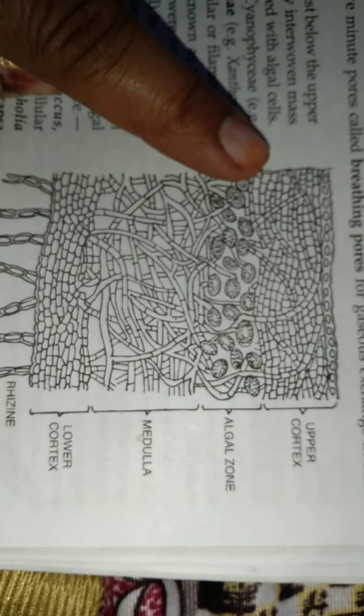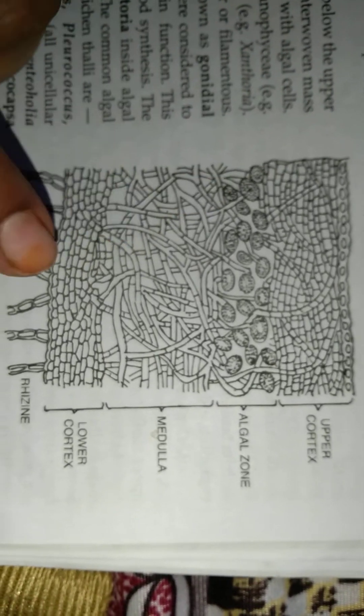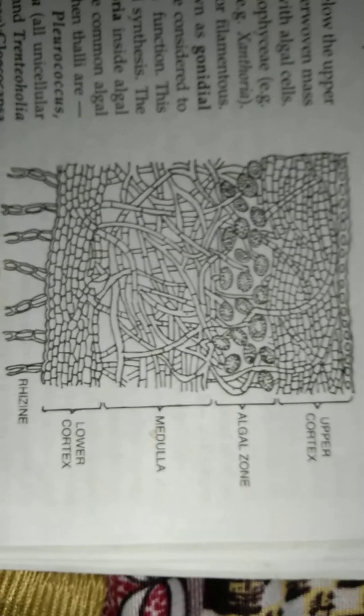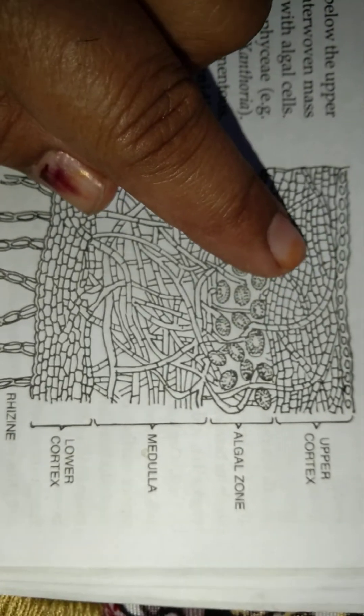And this is differentiated into upper cortex, algal zone, medulla, lower cortex, and rhizoids. This is the upper cortex.